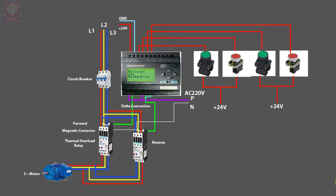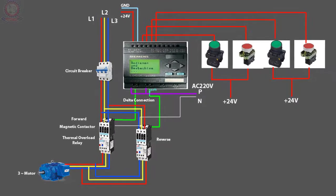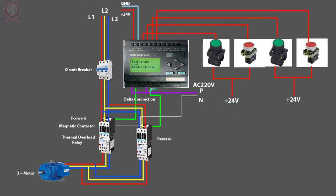Now we will explain the circuit diagram. In this circuit diagram, the main project is a 3-phase motor forward-reverse control. The application will also include the practical part using software. You can use the hardware parts and very small parts to complete the main project.